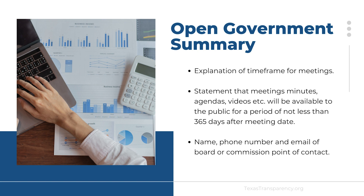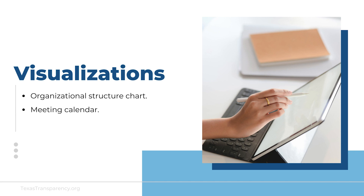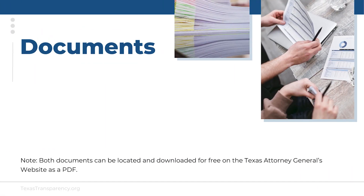Post visualizations to your transparency page showing an organizational chart of your entity including all divisions, supervisors, and full-time positions — employee names are optional. Also include a meeting calendar with all scheduled meetings showing date, time, and location for in-person meetings. Please specify if meetings will be streaming only. The calendar must be updated monthly, yearly, or as applicable. Post the following downloadable or linked documents to your dedicated award page.